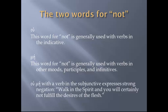'Ou mē,' by the way — if you put them together with a verb in the subjunctive, it expresses strong negation. One grammar calls it the subjunctive of emphatic negation. In Galatians, where it says 'walk in the Spirit and you will certainly not fulfill the desires of the flesh,' you actually have 'not-not' there — 'ou mē.' Two nots in Greek makes it even stronger negation, as opposed to English, where two negatives make a positive. So that is 'ou mē' in the subjunctive of emphatic, strong negation.